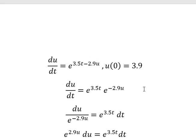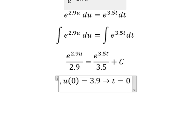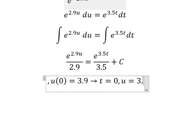Now we have the initial condition, that means when t equals 0, u equals 3.9.